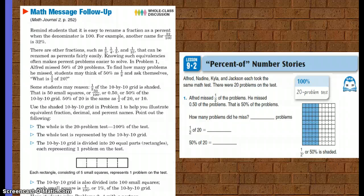Alfred missed 50 percent of 20 problems. You had to find how many problems he missed. So you needed to think of 50 percent as half. And half of 20, of course, we said is 10.